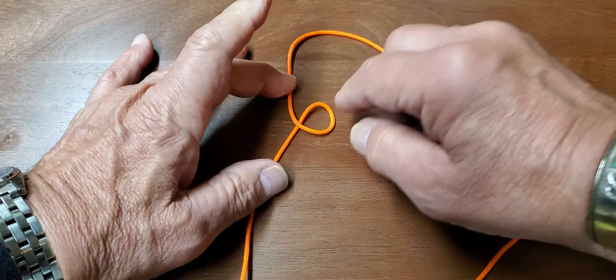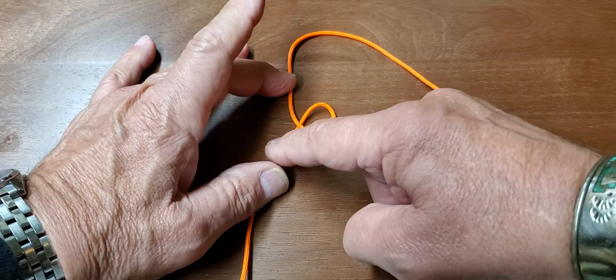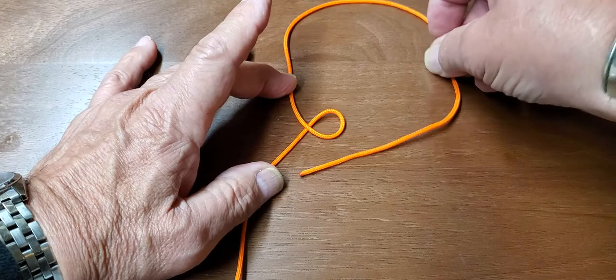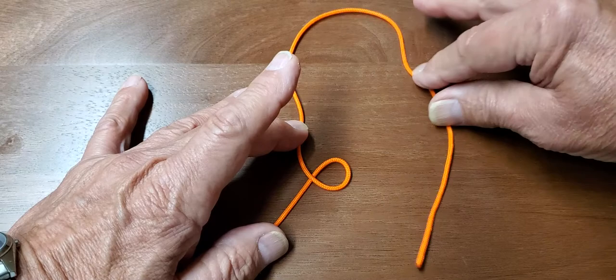Now you notice on the loop, the top part of the cord goes over the long end of the cord. If it's not looking like that, you flipped it the wrong way. Now I'm going to continue my circle, making my circle. We don't want to lose our circle.